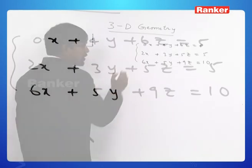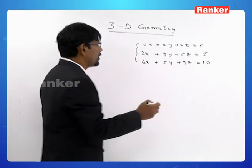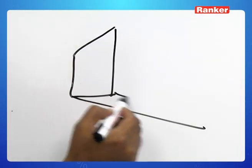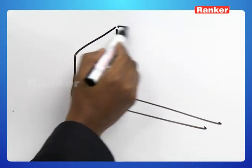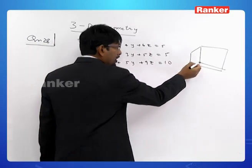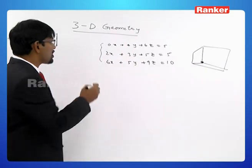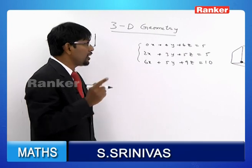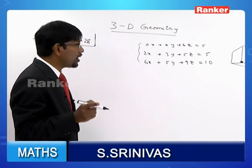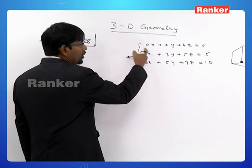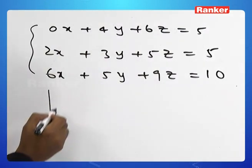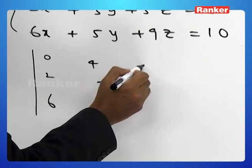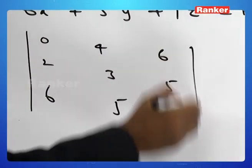These three planes will meet in a point provided the system of linear equations has a unique solution. We have a system of three equations in three unknowns. This can be determined by finding the determinant of the coefficient matrix: delta = |0, 4, 6; 2, 3, 5; 6, 5, 9|.